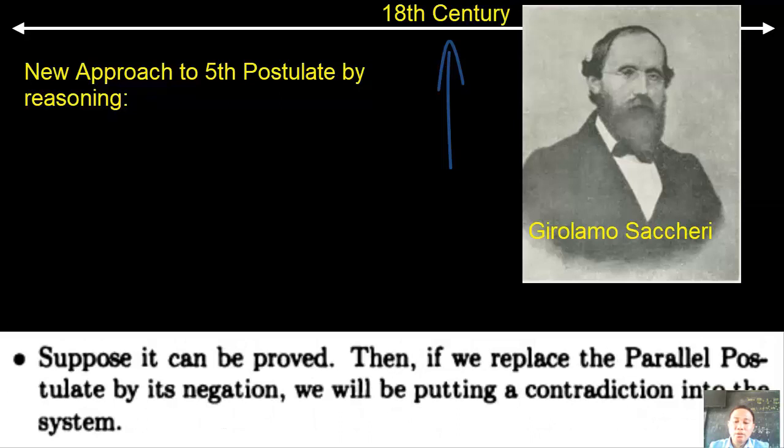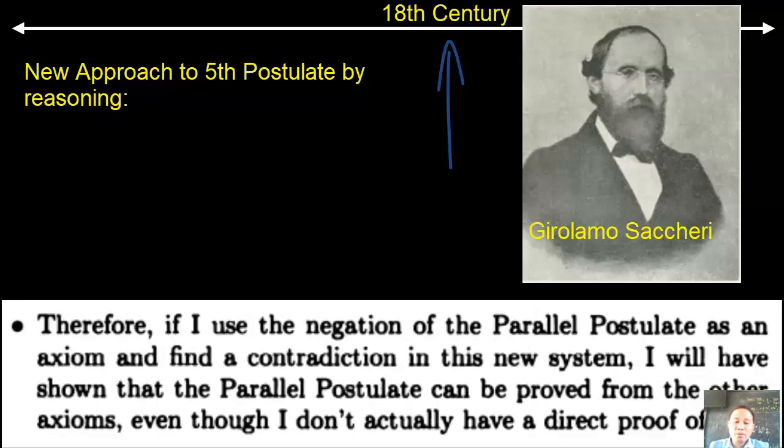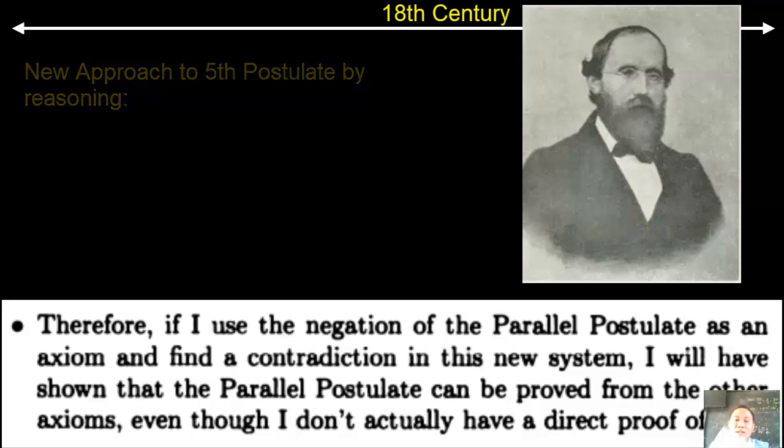Third, suppose it can be proved. If we replace the parallel postulate by its negation, then contradiction will be put in the system. Therefore, if I use the negation of the parallel postulate as an axiom and find a contradiction in the new system, I will have shown that the parallel postulate can be proved from the other axioms even though I don't actually have a direct proof of it.